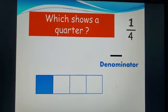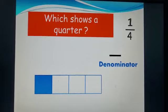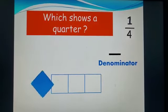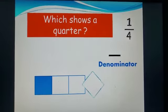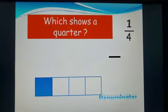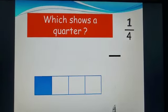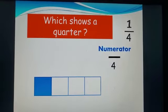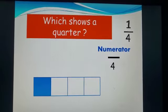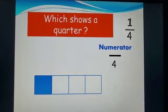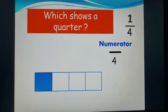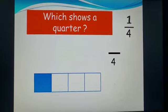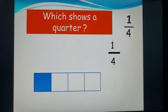Let's count our denominator. Let's count how many parts there are all together. One. Two. Three. Four. There are four parts all together. Let's have a look at our numerator. How many parts are shaded? One. This represents a quarter.